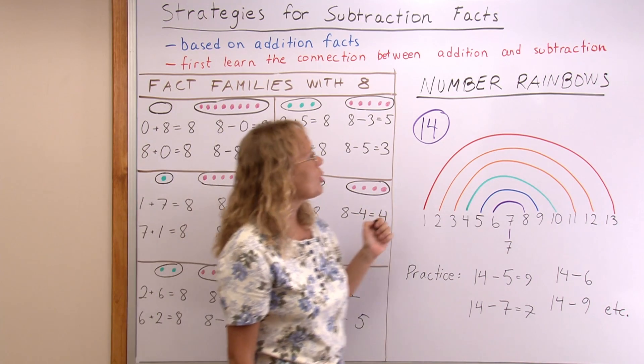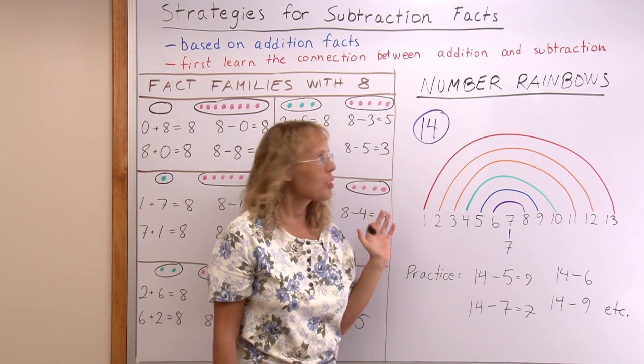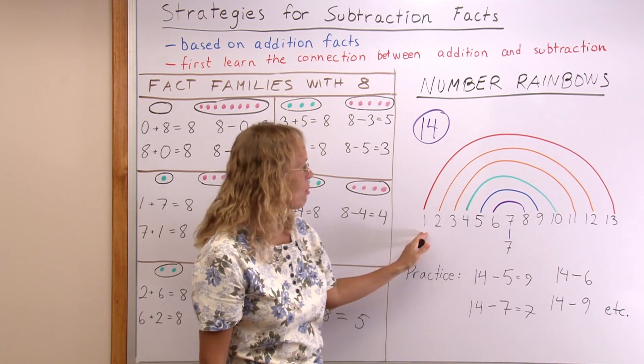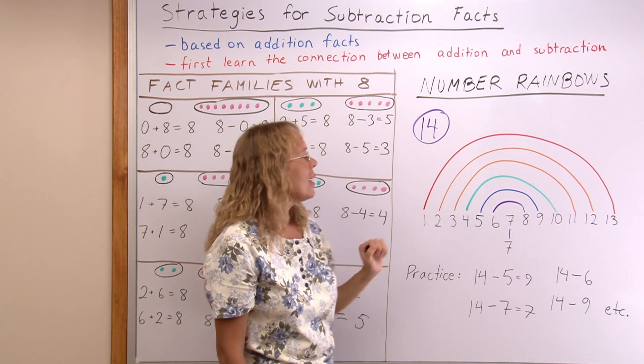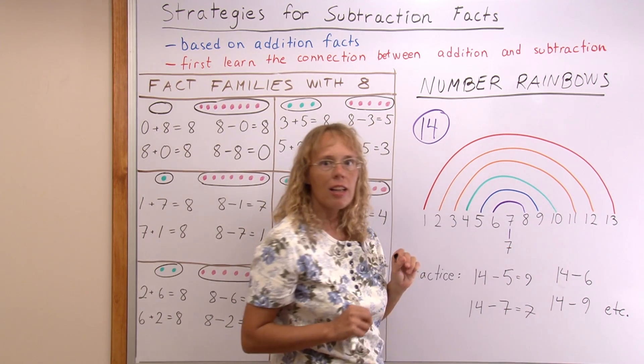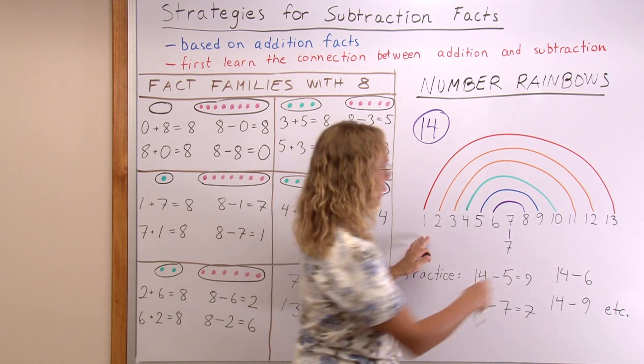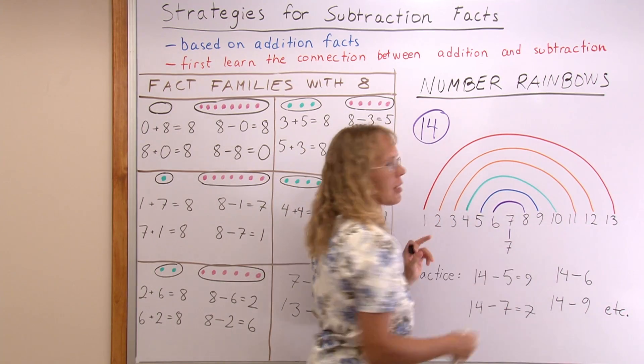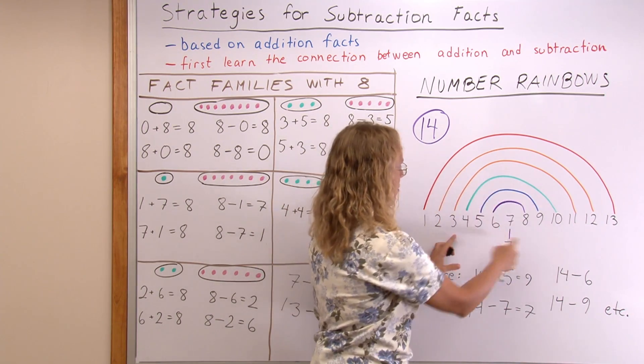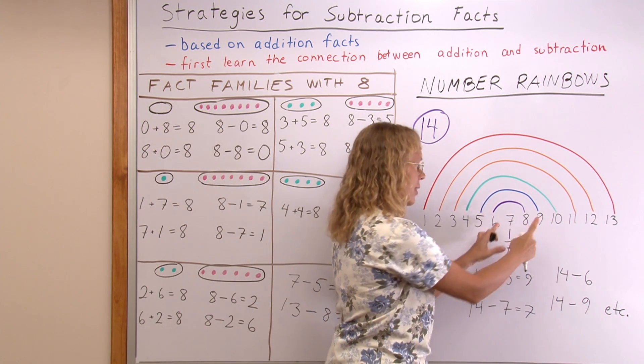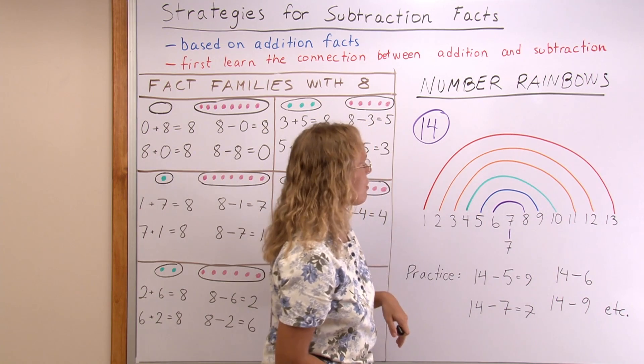But then here I drew a fun little tool that you can also use called number rainbows. And this particular rainbow is for 14. And in it, if you have two numbers connected with an arc, then they add up to 14. 1 and 13 makes 14, right? 2 plus 12 is 14. Each time, 3 and 11, 4 and 10, 5 and 9, 6 and 8, 7 and 7 make 14.